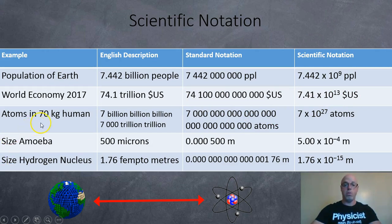How many atoms are in an average human being of 70 kilos? 7 billion billion or 7,000 trillion trillion atoms. So when you write it in standard notation, it's pretty big. It doesn't really fit the column. There's a total of 27 zeros after the 7. So that's 7 times 10 to the 27 atoms.